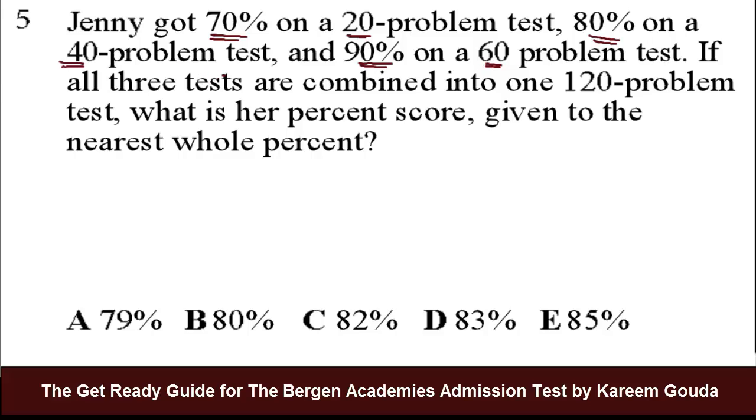Now, all three tests are going to be combined, so I'm going to add the 20 problems to the 40 problems, that's 60, to the 60 problems, making it one big 120 problem test. So what we need to do is we need to know how many questions she got right on each of the tests separately, and then add the number of questions she got right, thus getting her new total out of the new 120 problem test. Then we can find the percentage.